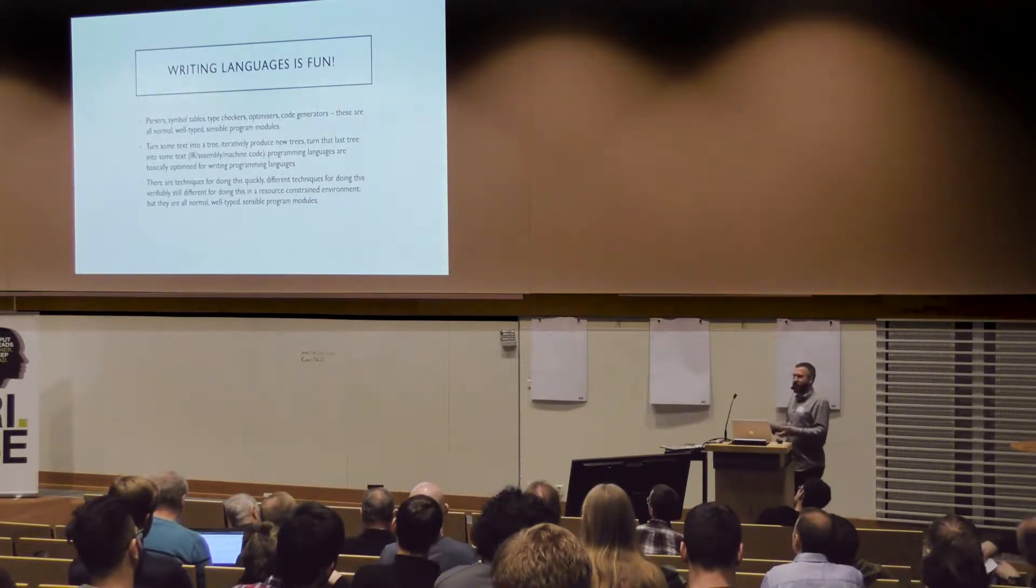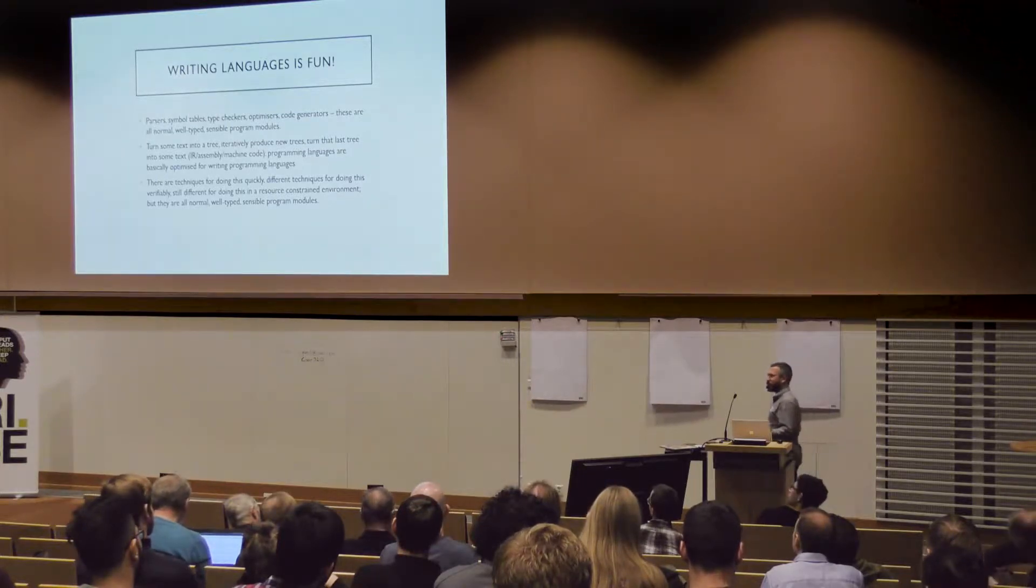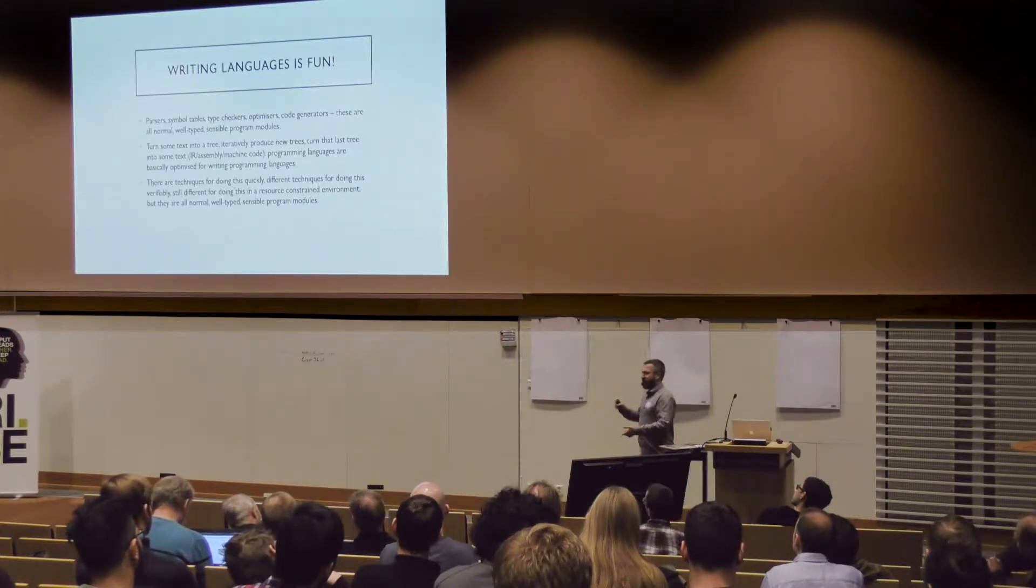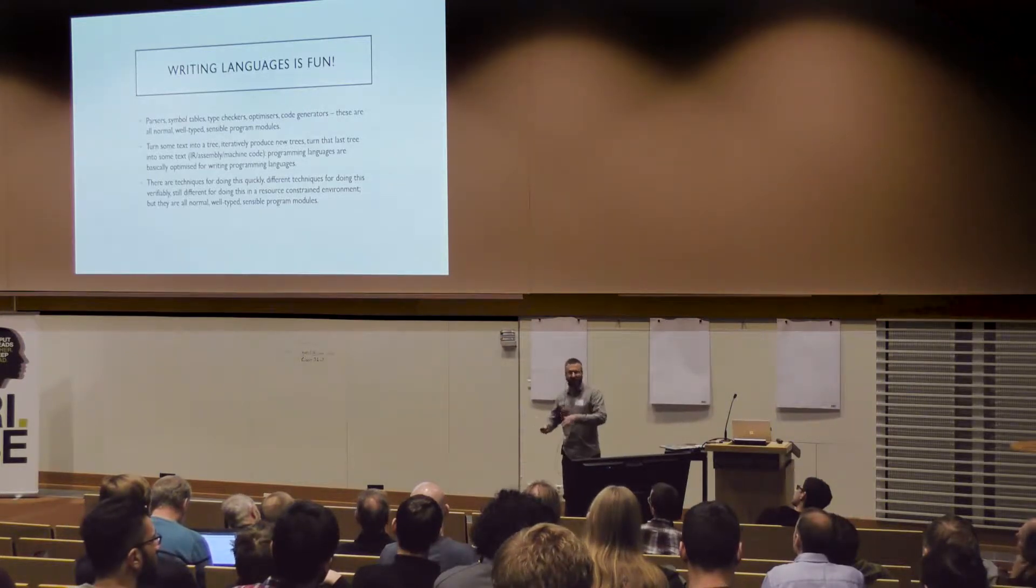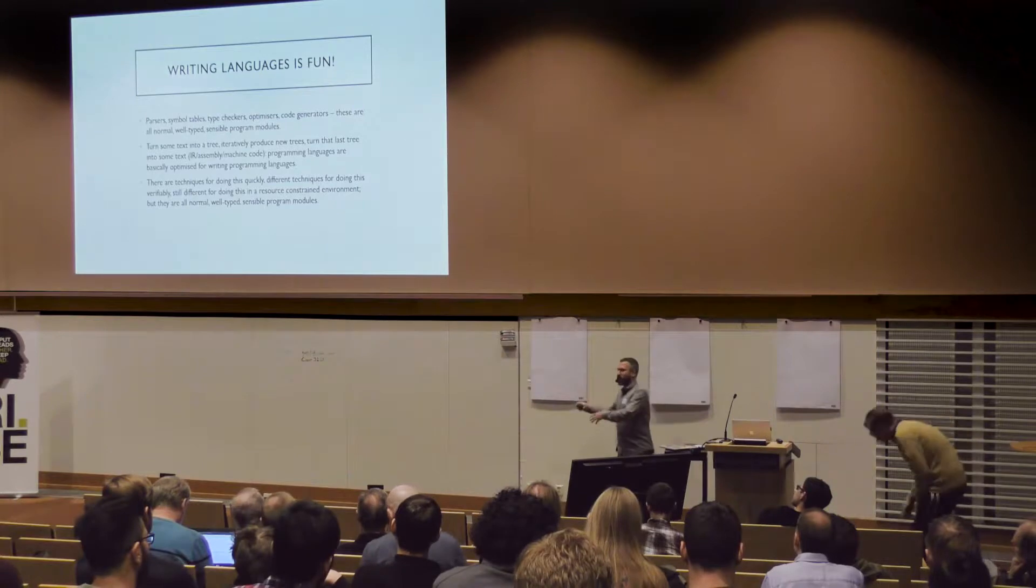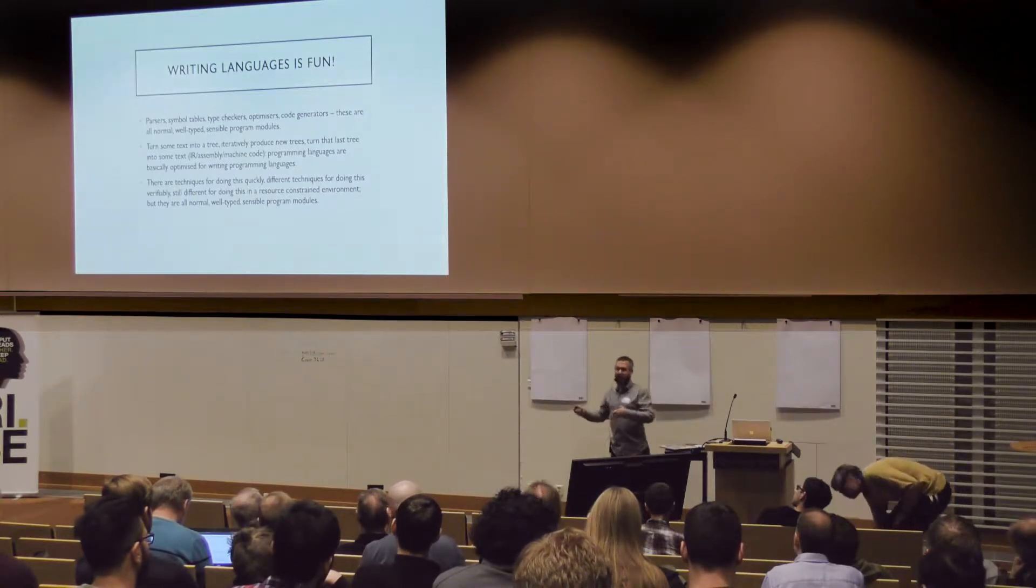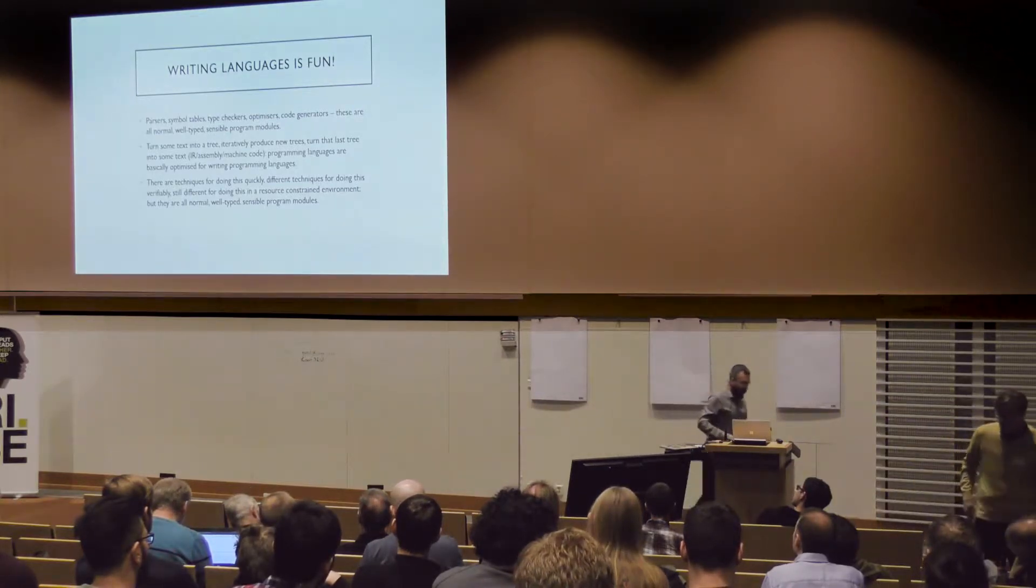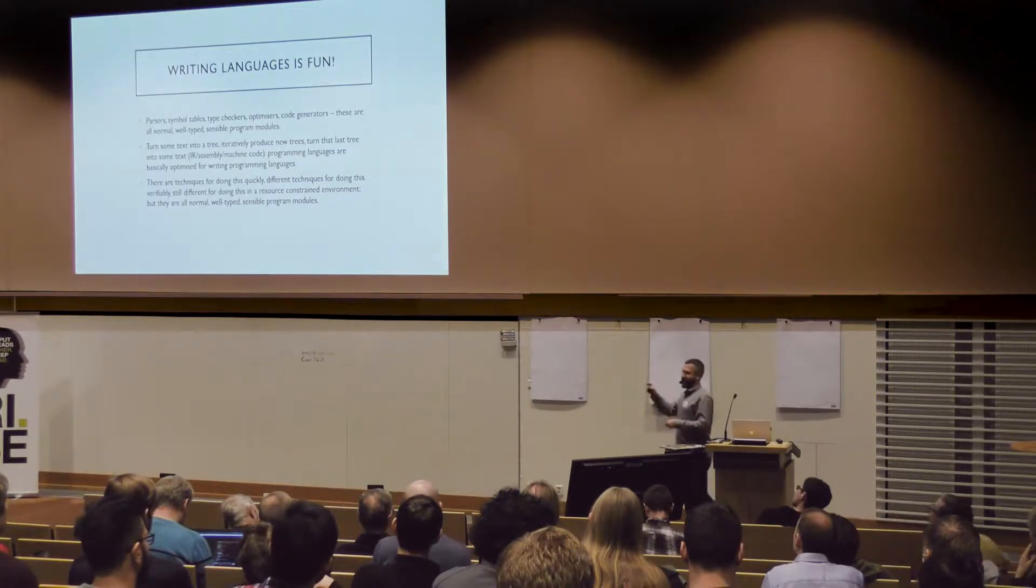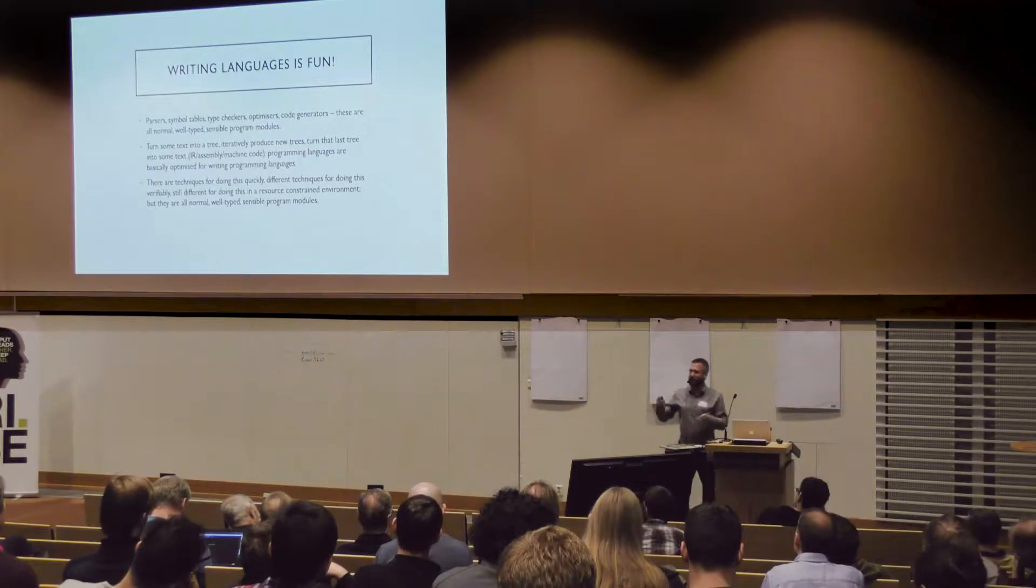Fundamentally, the problem of writing a programming language is sort of horrifyingly simple. You take some text, you parse it and create a tree. And then we create a new tree from that tree and a new tree from that tree as we go through all our steps, whether we're going from parse trees to ASTs to doing type checking to doing optimization, that's fine. And at the end, we then emit another blob. It's a really straightforward problem because programming languages are optimized for writing programming languages because they're developed by programming language authors.